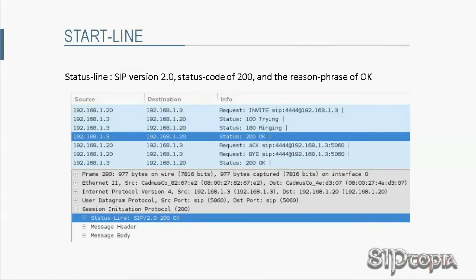The next SIP message is also a response with a status line and a message header, but now it also includes a message body, which is optional. The status line is composed of SIP version 2.0, status code 200, and the reason phrase 'OK' to indicate to human users that the request was successful.